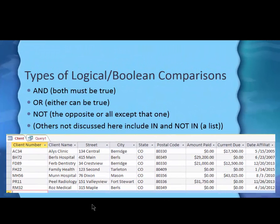These logical or Boolean operators: for AND, both must be true; for OR, either can be true; and for NOT, you take the opposite or all except that one.